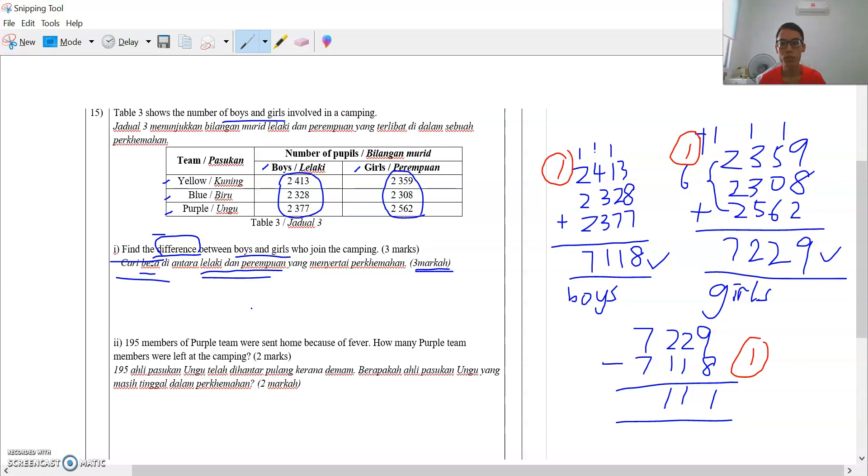Question 2: 195 members of Purple Team were sent home because of fever. How many Purple Team members were left? So we need to... You see the word left here? Yang masih tinggal. So again, you have to minus.